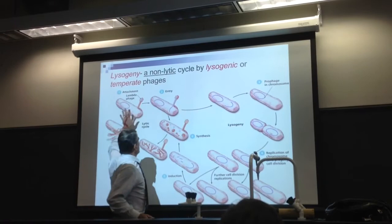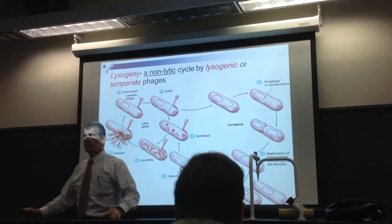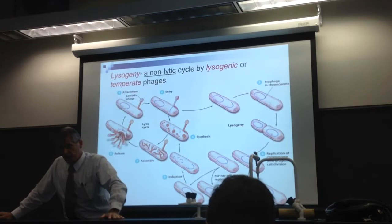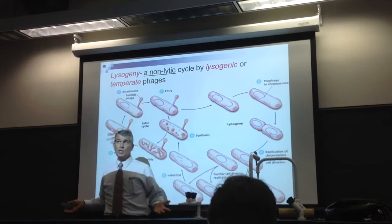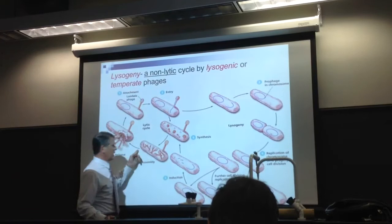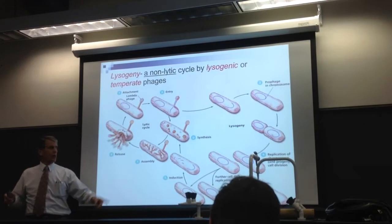Lytic cycle, lysogenic cycle. Do you understand? Is it clear? So then it goes to the lytic cycle after this? Yes, that's right. Now it can go through many generations, many years. If it comes out, it's going to go into the lytic cycle. If it goes into that cycle, what's going to happen to the cell that it was in? It's going to kill it — lyse it, rupture it.